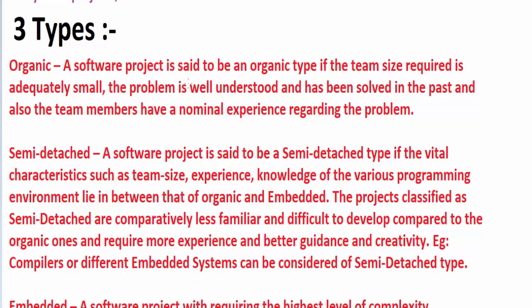The first type is organic. A development project can be considered organic type if it deals with developing a well-understood application program. The size of the development team is reasonably small and the team members are highly experienced — they have experience regarding the problem or developing similar types of problems.